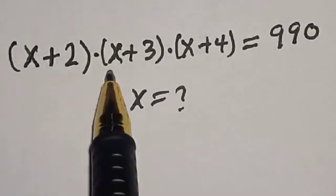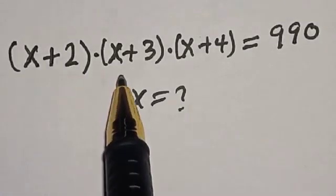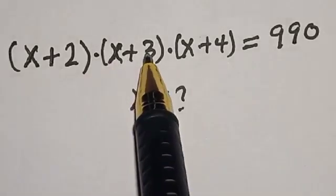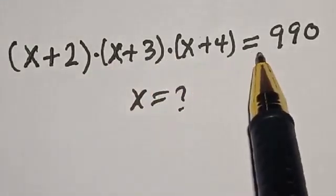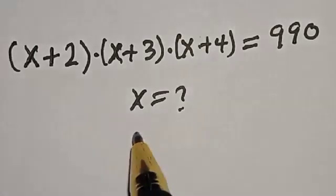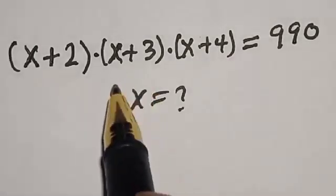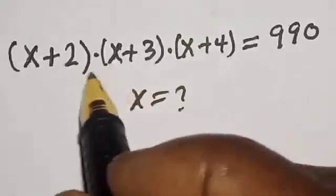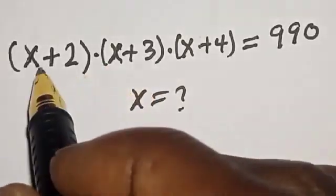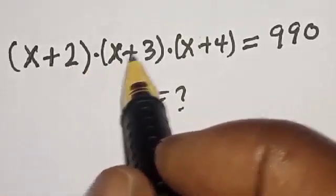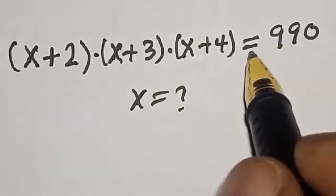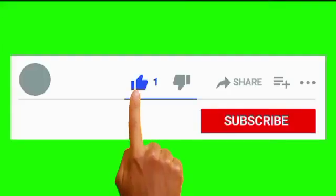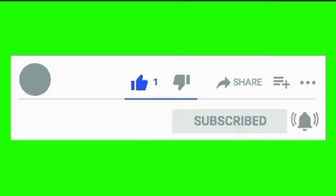Given the equation: (s+2)(s+3)(s+4) = 990. Hi everyone, welcome to my class. In this class we want to find the value of s from this equation: (s+2)(s+3)(s+4) = 990. Before we proceed, please don't forget to like, share, comment and subscribe. Thank you.